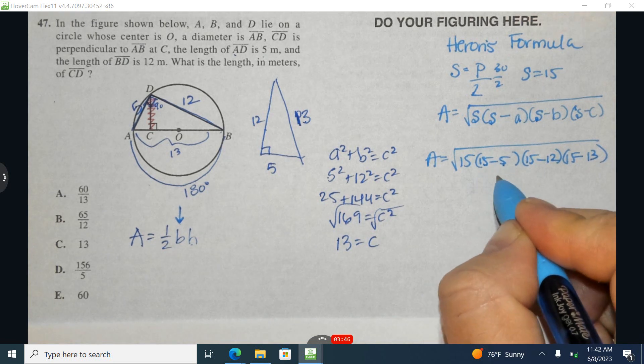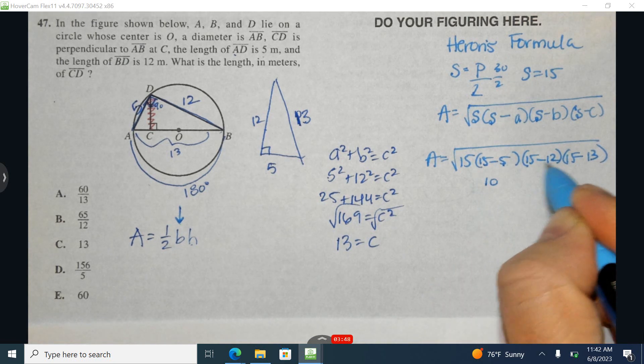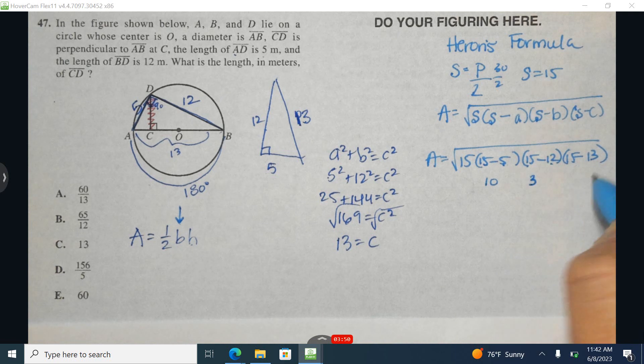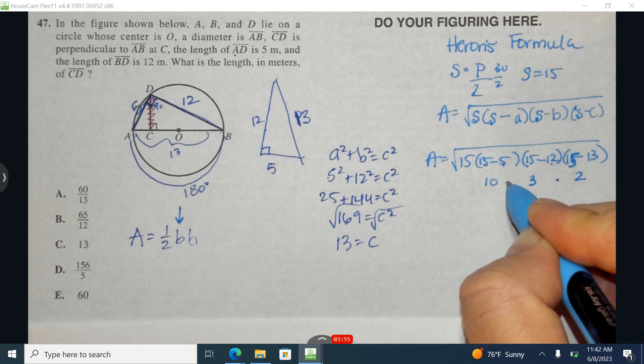So I'll say 5 minus 5 minus 12 and minus 13. 15 minus 5 is 10. 15 minus 12 is 3. And 15 minus 13 is 2. And I want to add these all up and then take the square root.